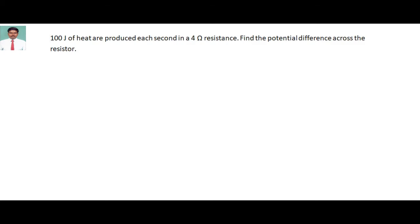100 joules of heat are produced each second in a 4 ohm resistance. Find the potential difference across the resistance.